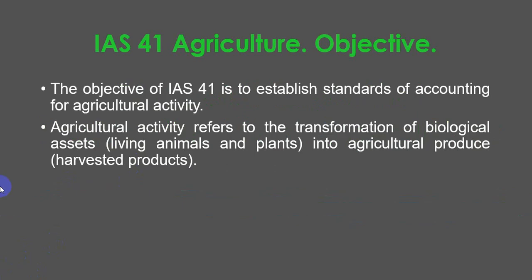The objective of IAS 41 is to establish standards of accounting for agricultural activity. Agricultural activity refers to the transformation of biological assets — living animals and plants — into agricultural produce, which are harvested products.